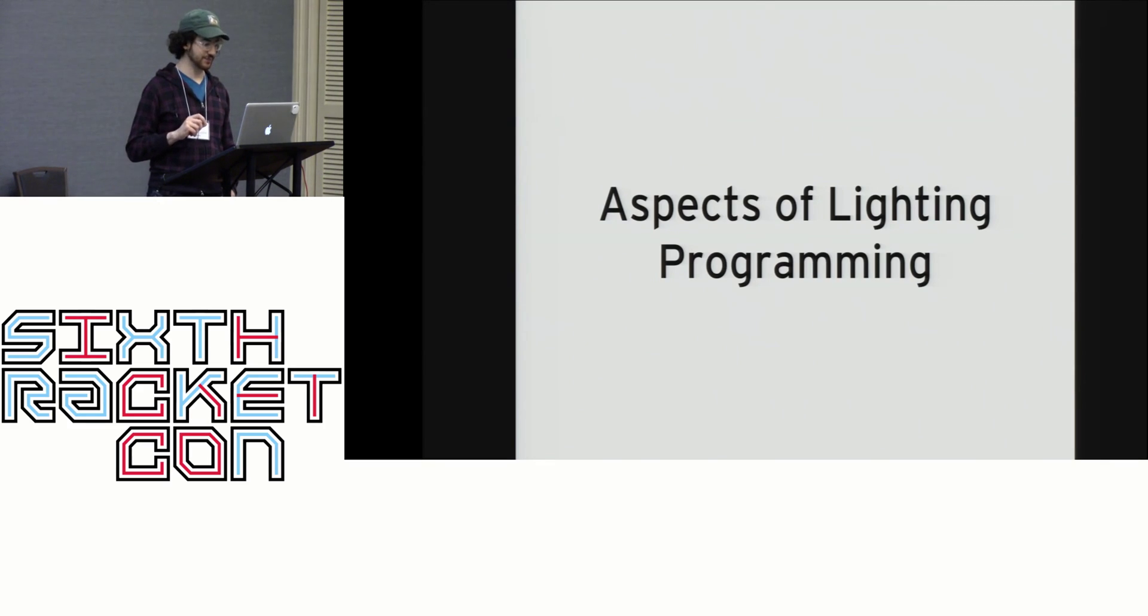Now, most lighting programming languages are far from Turing-complete, but they definitely are imperative. The programmer sends commands telling the equipment what to do. Typical commands might be channel 7 at 70%, or group 7 at color pal at 20, or Q6.2 times 7.5.